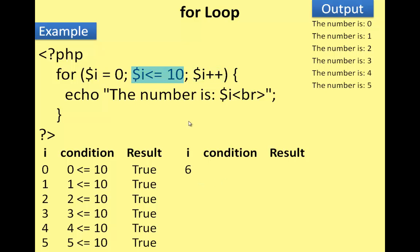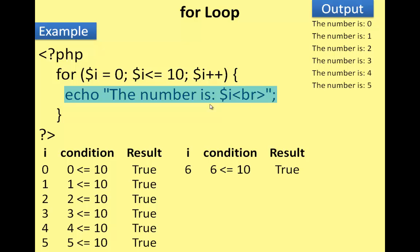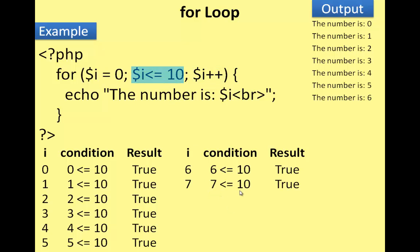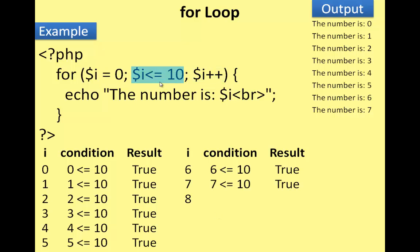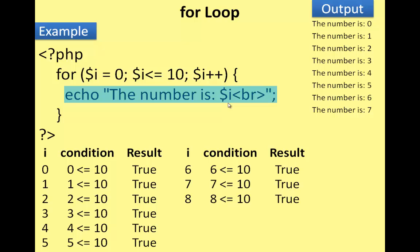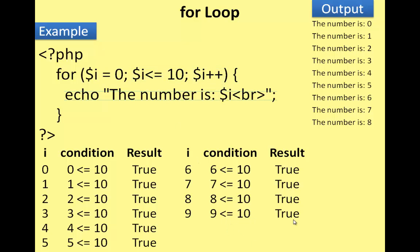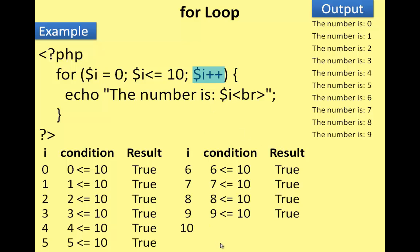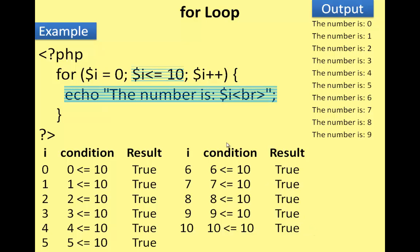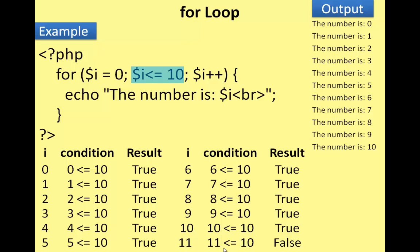i is checked at 6 — less than or equal to 10, condition true, number 6 prints. i increments to 7 — condition true, number 7 prints. i increments to 8 — condition 8 less than 10 true, number 8 prints. i increments to 9 — condition true, number 9 prints. i increments to 10 — 10 less than or equal to 10, condition true, so number 10 prints. i increments to 11.